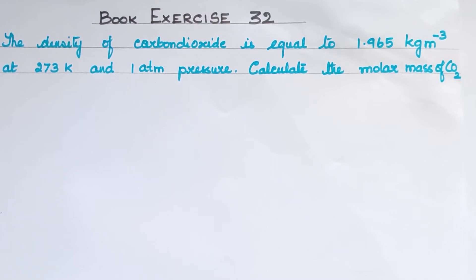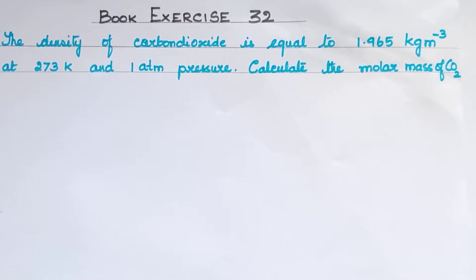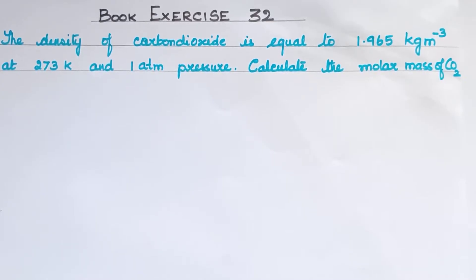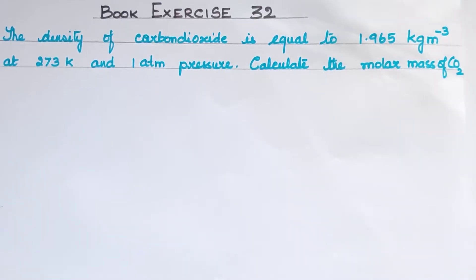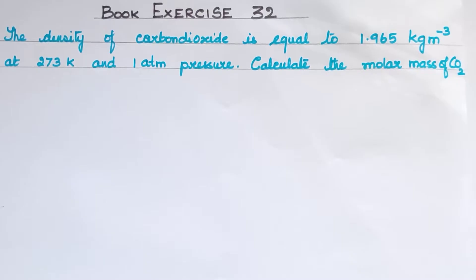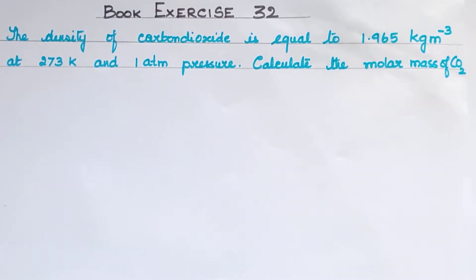Hello my dear students. Today we will cover basic concepts of chemistry and chemical calculations. In this chapter, we will solve book exercise question number 32. The density of carbon dioxide is equal to 1.965 kg per meter cube at 273 Kelvin and 1 atm pressure. Calculate the molar mass of CO2. This question is a very simple question.